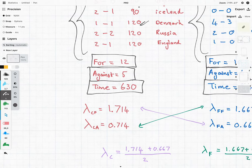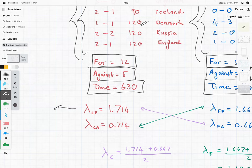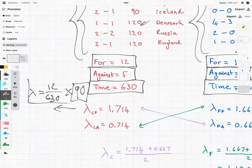Anyway, what I've then done is I've calculated my lambdas, and in order to get my lambdas, what I've done has just been, say, 12 over 630 times 90 minutes, the 90 minutes that we're going to be playing in this upcoming game.